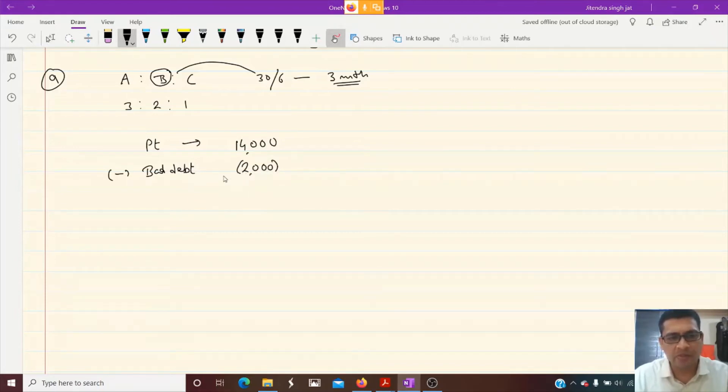So when we adjust bad debt, the profit for the year will be 12,000. Now by using this profit, we will compute the share of B's. B's share in profit.